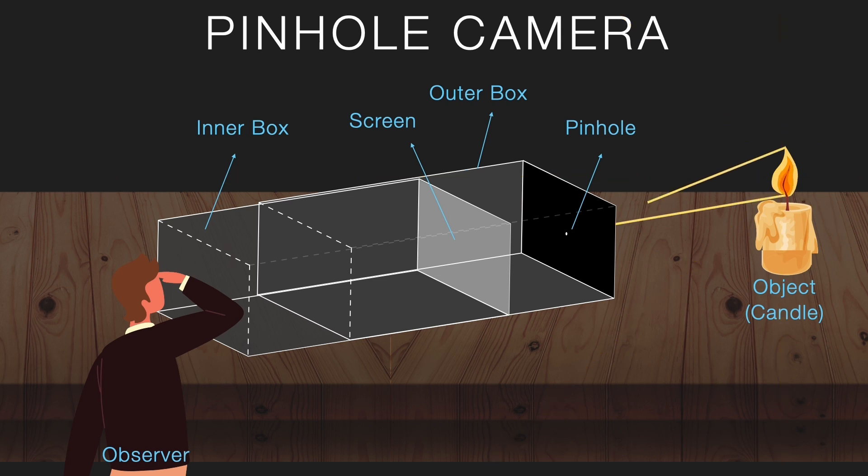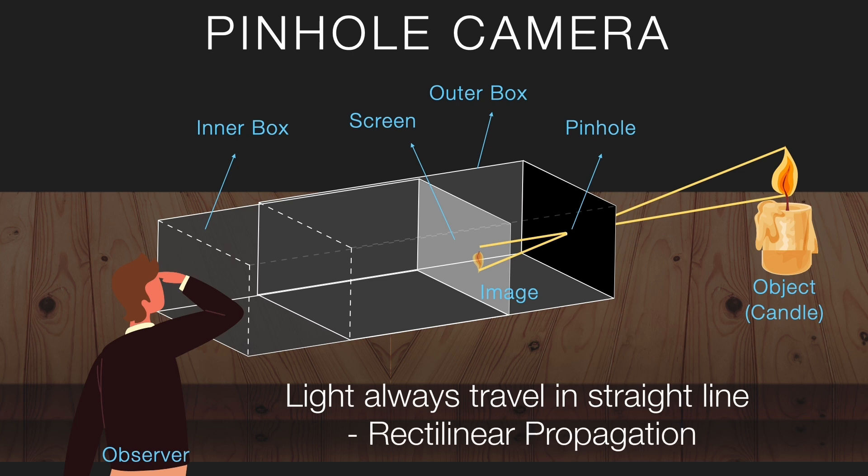These two rays travel in straight lines, slip through that tiny hole, and land on the screen at the back. Since light always moves in straight lines—that's the basic rule we call rectilinear propagation—the rays cross over and the image forms upside down.